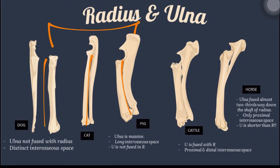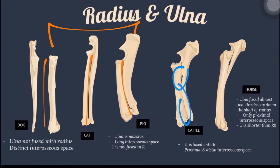In cattle, the ulna is fused with the radius, with a proximal and distal interosseous space. In horse, the ulna is fused almost two-thirds of the way down the shaft of the radius, and there is only a proximal interosseous space present. Also note that the ulna of the horse is shorter than the radius.